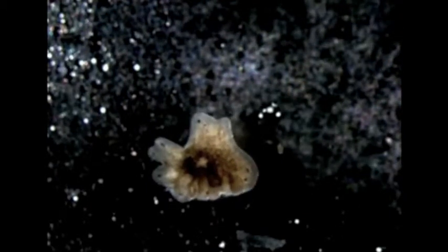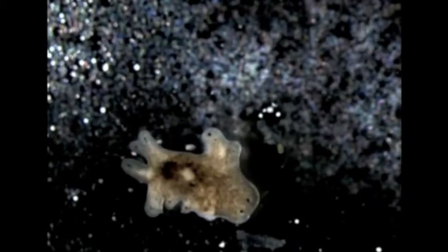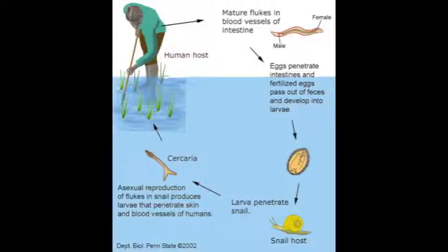Schistosoma is an example of a flatworm with a unique life cycle because it involves multiple symbioses. First, the male and female blood flukes sexually reproduce inside a vertebrate such as a human. Then larvae emerge as parasites on a secondary host like a snail. Afterwards, the flukes reproduce sexually within the snails, and the larvae then emerge to infect yet another vertebrate host as adults.